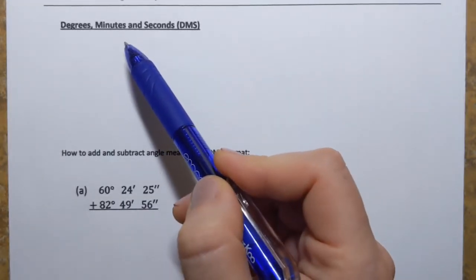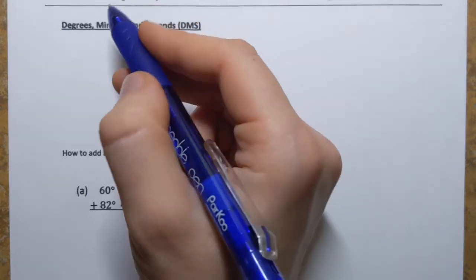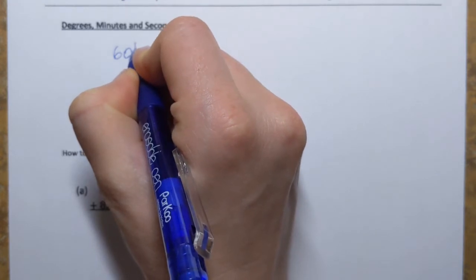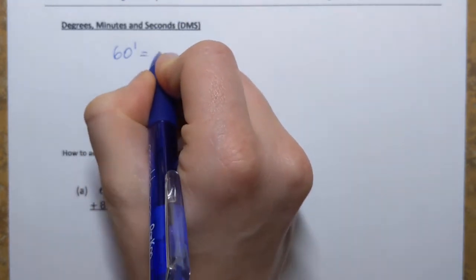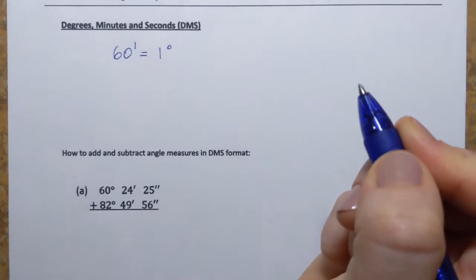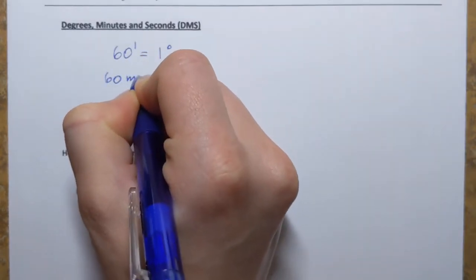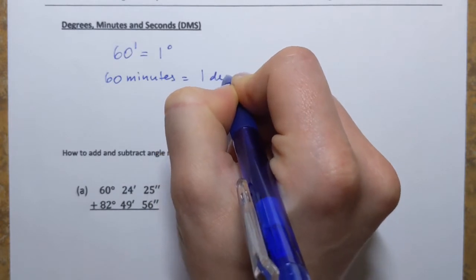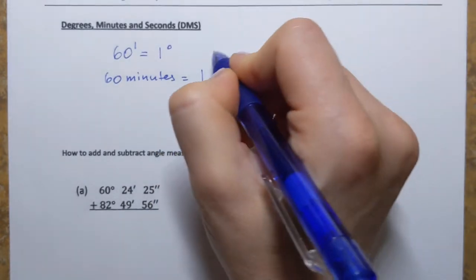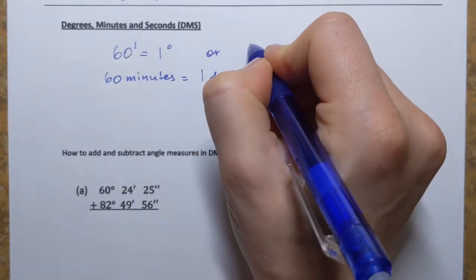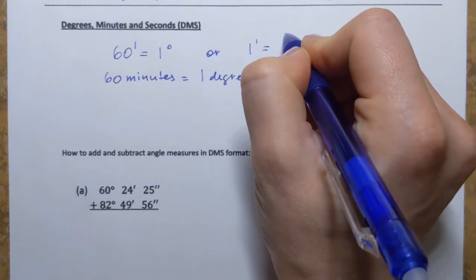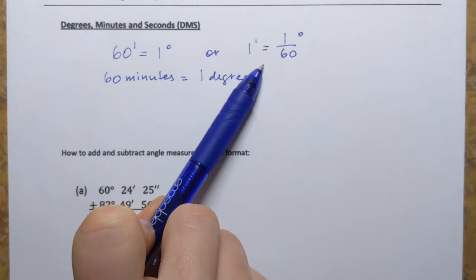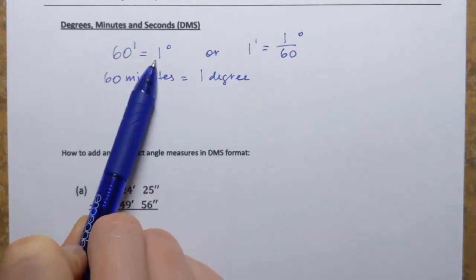This is how they are related to degrees: 60 minutes — we denote minutes by the symbol prime — equals 1 degree. Or we can say that 1 minute is one sixtieth of a degree. We get that if we divide both sides by 60.